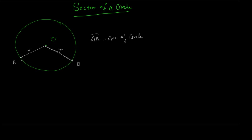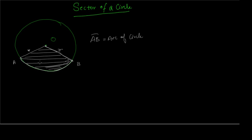So OA is a radius, OB is a radius, and AB is an arc. These three components — two radii and the arc — encompass some region. You can see this region AOB enclosed by them. The region enclosed by two radii and their corresponding arc is called the sector of the circle.